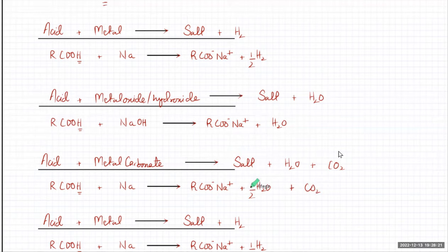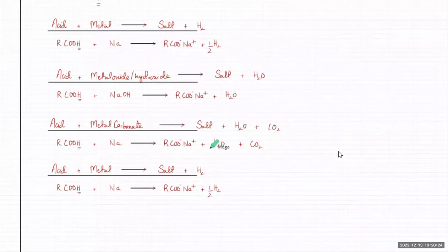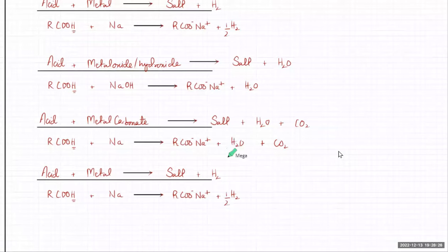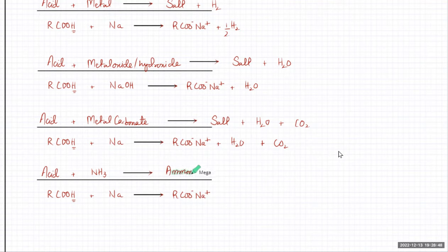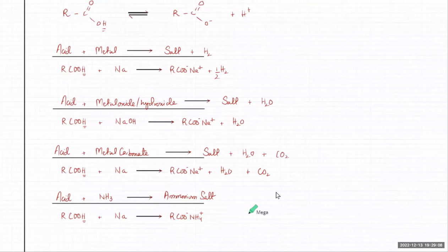The third reaction is with ammonia, and the fourth one is also with ammonia - that will result in the formation of an ammonium salt. So it will become NH₄⁺. That's your four typical acid-base reactions.